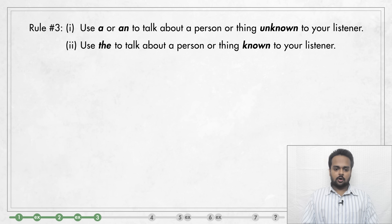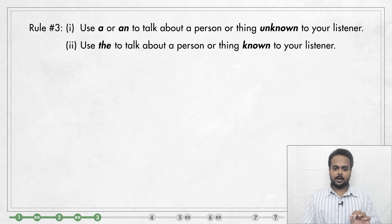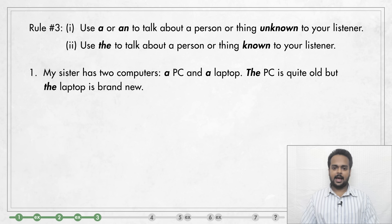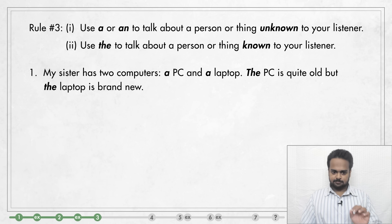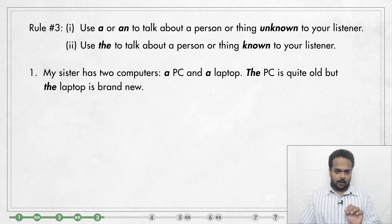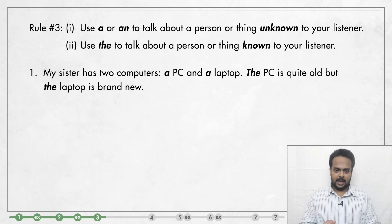Here's rule number three: use A or AN to talk about a person or thing unknown to your listener, and use THE to talk about a person or thing known to your listener. For example, my sister has two computers — a PC and a laptop. The PC is quite old, but the laptop is brand new. I say 'a PC' and 'a laptop' because that's the first time I'm mentioning the two computers — until this point, they are unknown to you, the listener. But now I can say 'THE PC is quite old, but the laptop is brand new.' When I say THE PC, you know which one I'm talking about — my sister's PC.